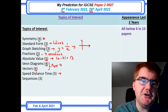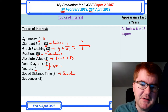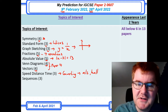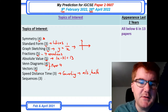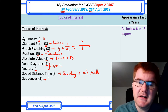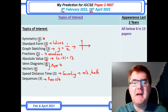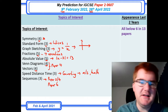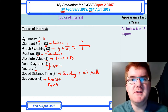For speed-distance-time, make sure you're aware of unit conversions — for example, converting from metres per second to kilometres per hour. Sequences can appear on both Paper 2 and Paper 4, but generally they're assessed on the Paper 6 investigation; just be aware they can occasionally appear on Paper 2 as well.